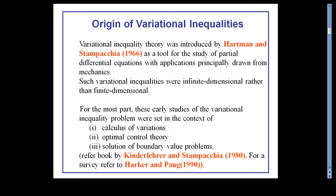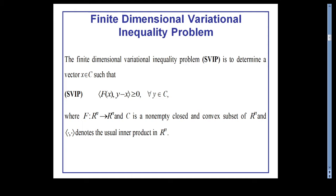Variational inequality problem was introduced in the year 1966 by Hartman and Stampacchia, and it was used as a tool for the study of partial differential equations. The finite dimensional variational inequality problem states that we need to find a vector x belonging to C such that the inner product of F(x) with y minus x is greater than or equal to 0 for every y in C, where F is a function from R^n to R^n and C is a non-empty closed convex subset of R^n.